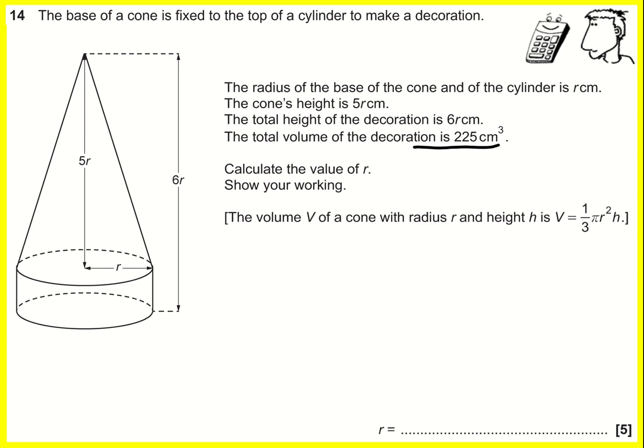So if we look at the cone first of all, because we're given the dimensions here, then V is going to be one-third π, and then we've got a radius r, so we use that, and the height is 5r. So that's going to give me five-thirds π r³.